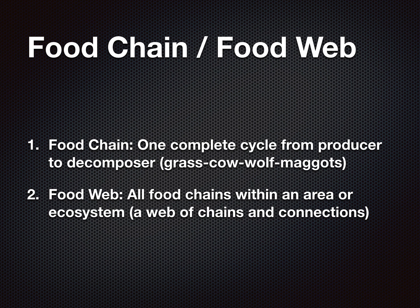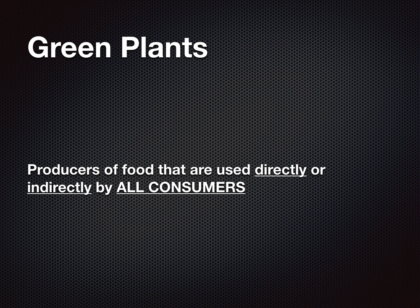Moving on to green plants. They are producers of food that are used directly or indirectly by all consumers. Not everything eats plants for a diet; however, everything that doesn't eat plants will eat something that does. So directly or indirectly — indirectly meaning it doesn't have to be the first thing that eats the plants, but it does get the energy from the thing that did eat plants in the first place.